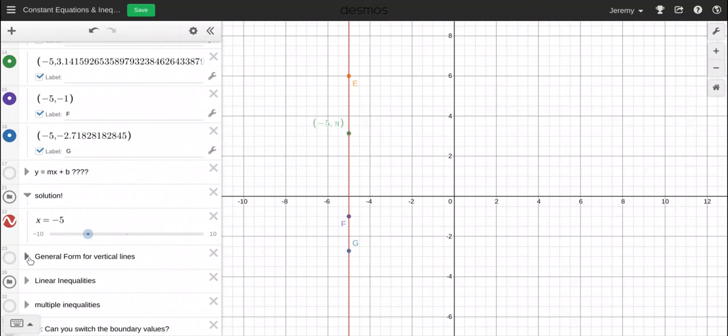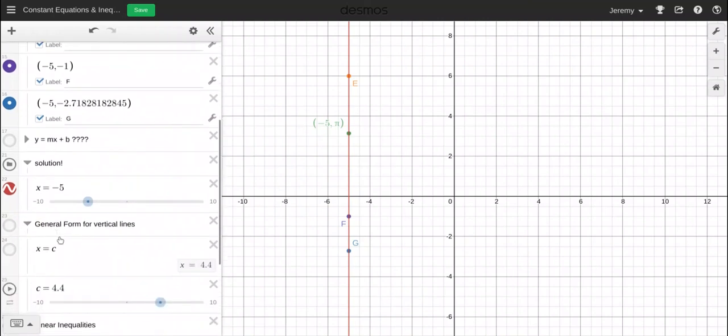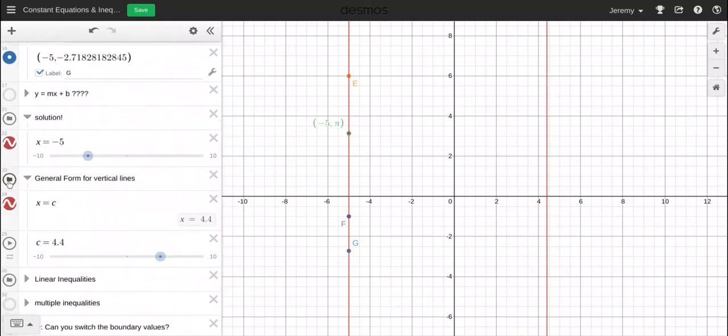The general form of all vertical lines is this: x equals c. And notice if this, let's pause it right there at 3.83. We can drag it over here to negative 7.7 and it's going through the x coordinate negative 7.7.